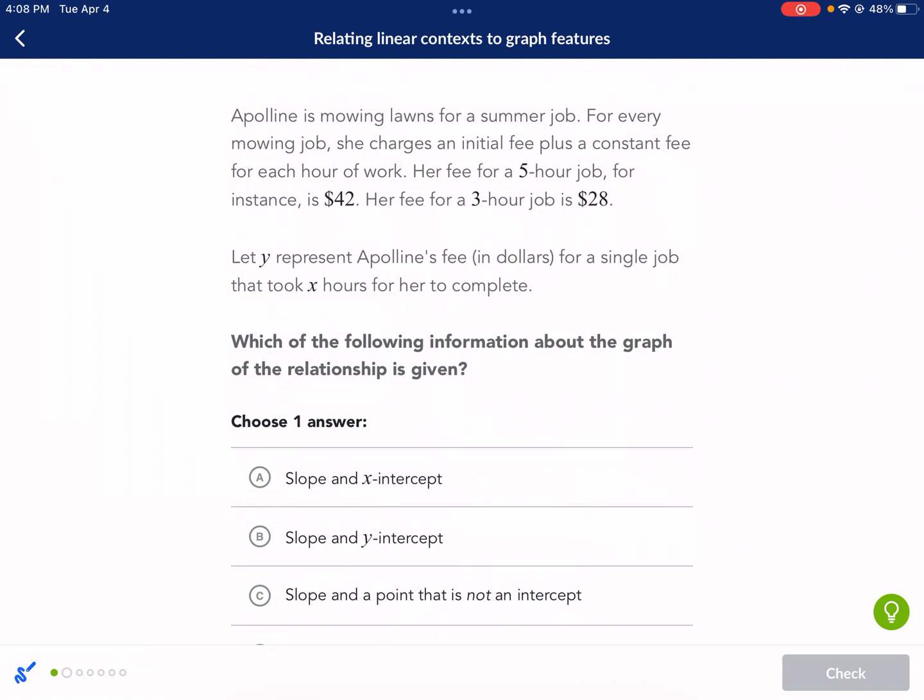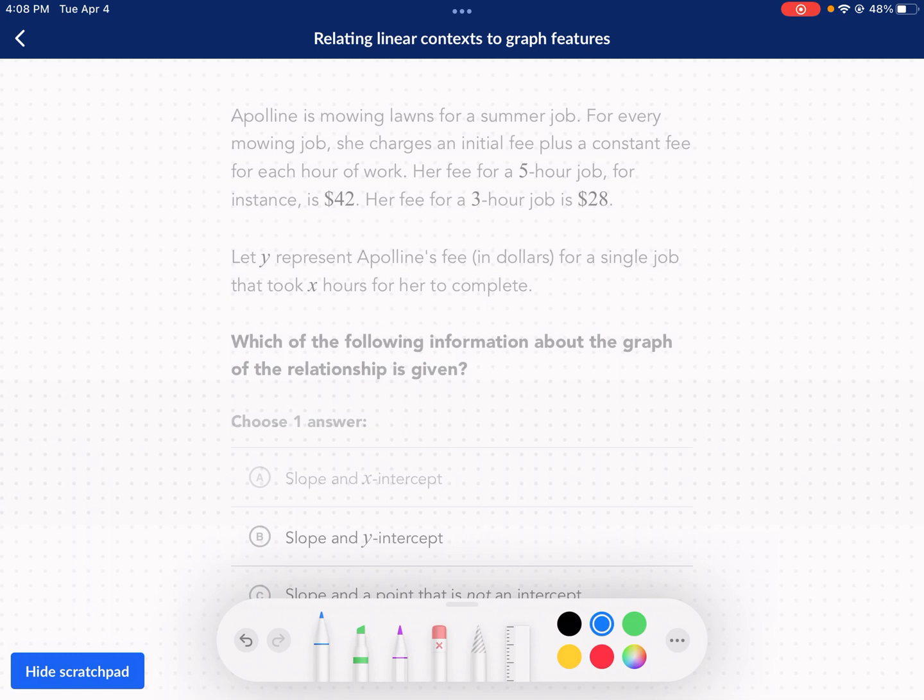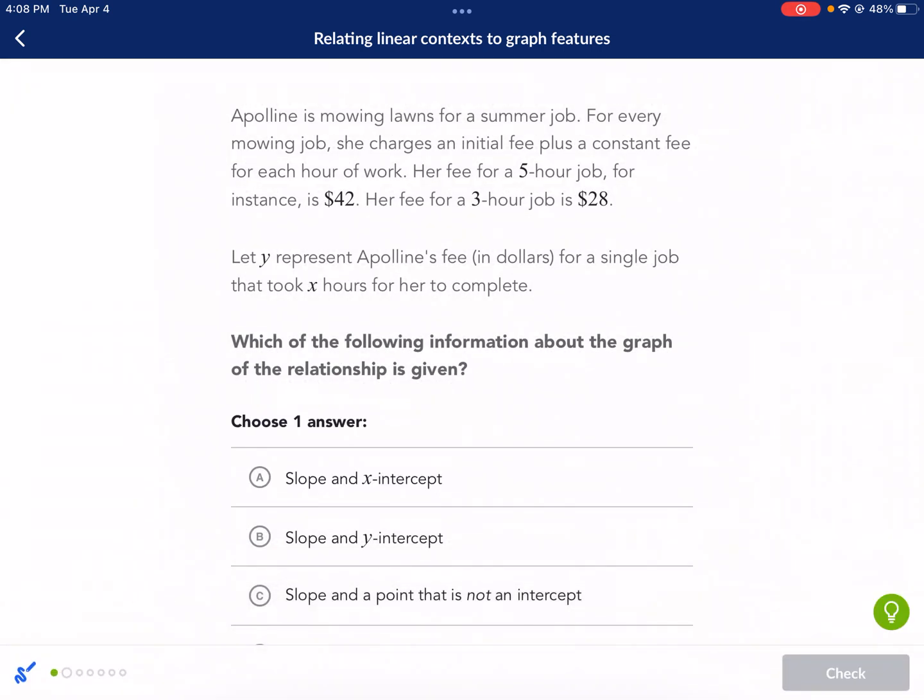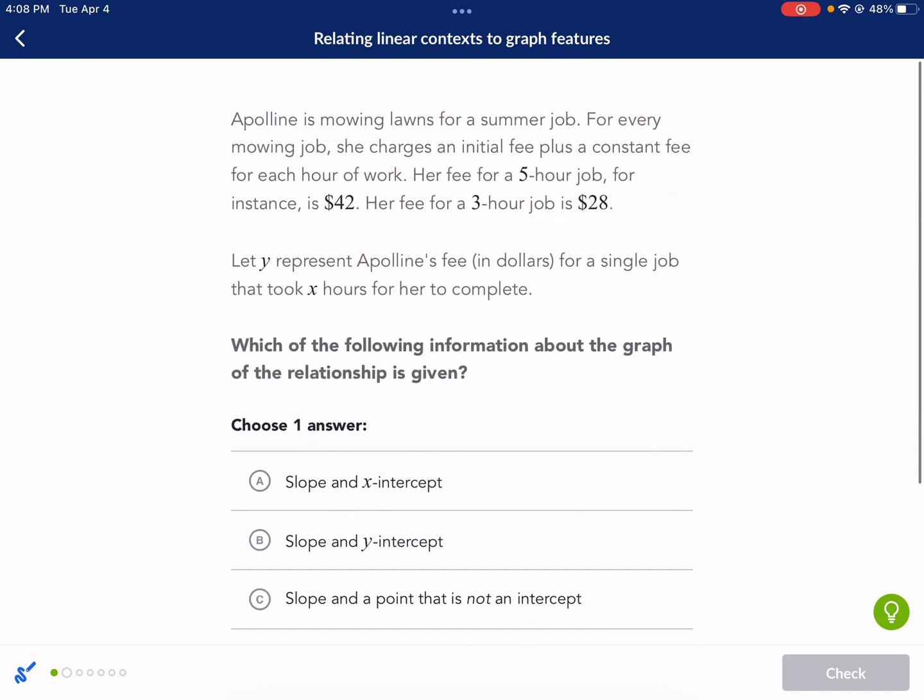Moving on to the next question. So Apolline is mowing lawns for a summer job. For every mowing job, she charges an initial fee plus a constant fee for each hour of work. Her fee for a 5-hour job, for instance, is $42. Her fee for a 3-hour job is $28. Let Y represent Apolline's fee in dollars for a single job that took X hours. Which of the following information about the graph of the relationship is given?